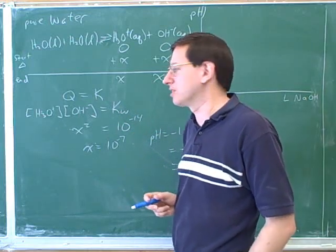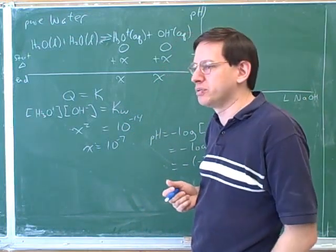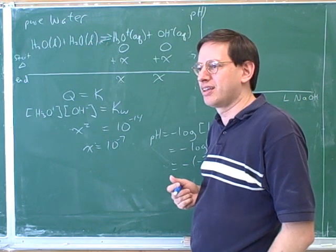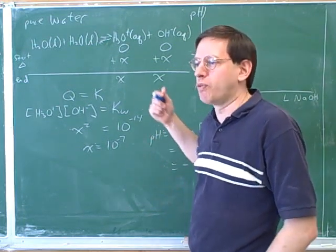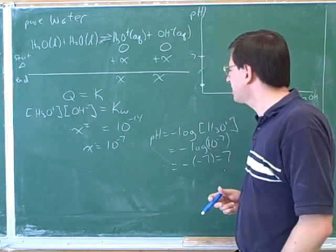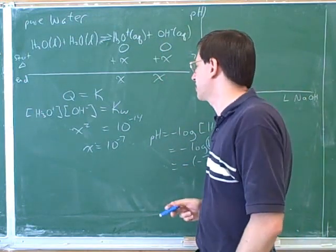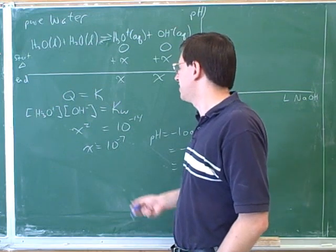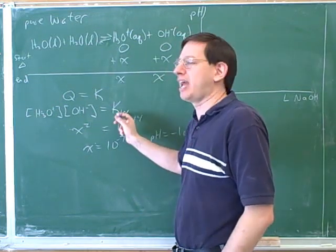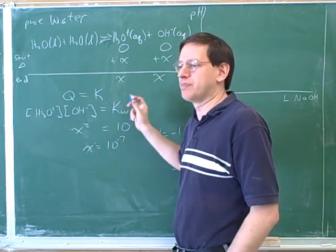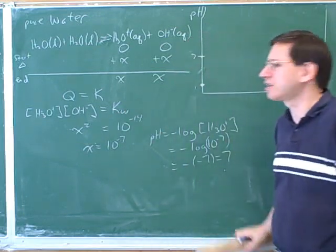Well, which case on the handout have we dealt with now? No acid or base. Yeah, the very first one, pure water, no acid or base. You guys already knew that the pH would be 7, but it's good to see how to work that out technically. So you should make a note on the handout that this is the place in your notes where we work through how to do that. Now we understand what the point of the KW is, which is a concept that you're expected to be familiar with from the class.